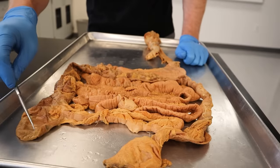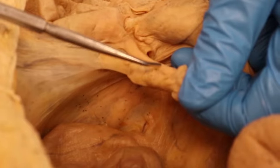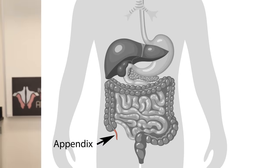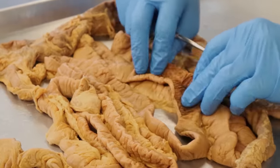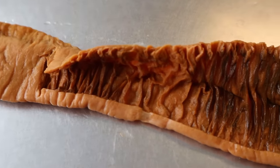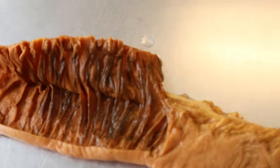A couple more features before we leave this dissection. On the cecum there's normally a little worm-like structure called the appendix — formally the vermiform appendix, because vermiform means worm-like. Moving back to the small intestine, if we open it up you can see these little folds called circular folds. Remember the question of why the small intestine is so long? It needs to absorb so many nutrients. These circular folds further increase the surface area, allowing for the absorption of even more nutrients.